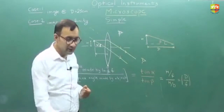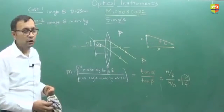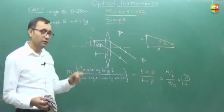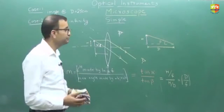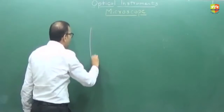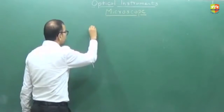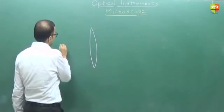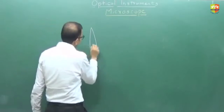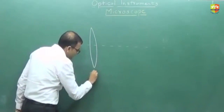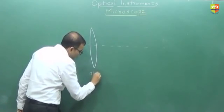Let us see the construction of compound microscope and we'll quickly derive the formula for that as well. A compound microscope has two lenses: one is the objective and another is the eyepiece. The objective is kept near the object.